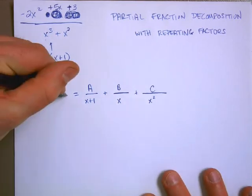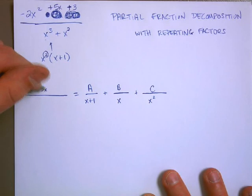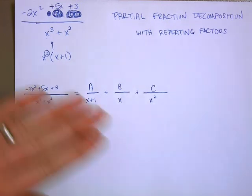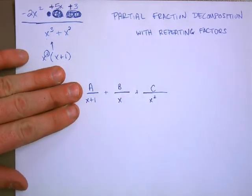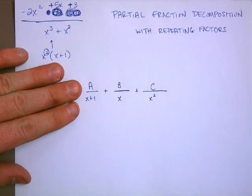And I know, in the end, I need to get negative 2x squared plus 5x plus 3 over x cubed plus x squared. Now, if I told you that I needed you just to add these three fractions together, you would need to find a common denominator.